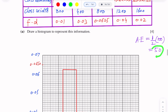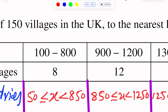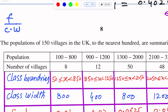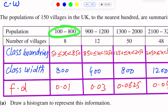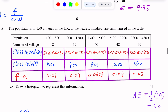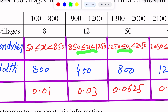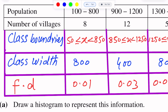We will subtract 50 from the lower class limit to find the lower class boundary, and add 50 to the upper class limit to find the upper class boundary. So for the first interval, we find the class boundaries. We then construct an extended frequency distribution table with class boundaries and class width for each interval.